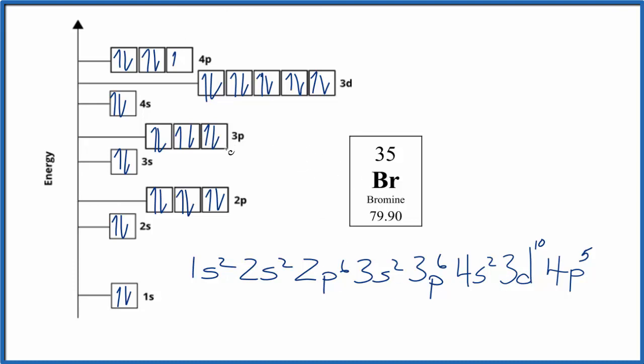Again, these represent the same thing. We're just trying to show where those electrons are around the nucleus of the bromine atom. This is Dr. B, and thanks for watching.